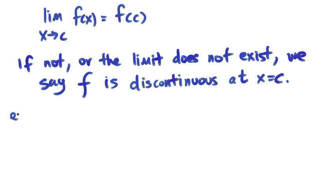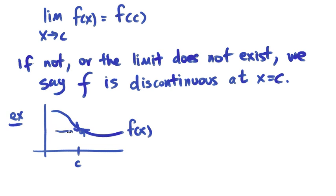For example, if we have a picture where we've got a c value, it's one of our x values, and we've got some f of x function. As long as the limit exists and is f of c, it is continuous.